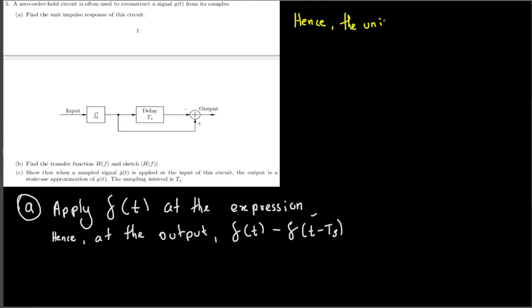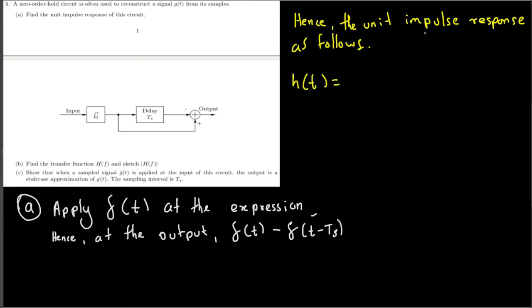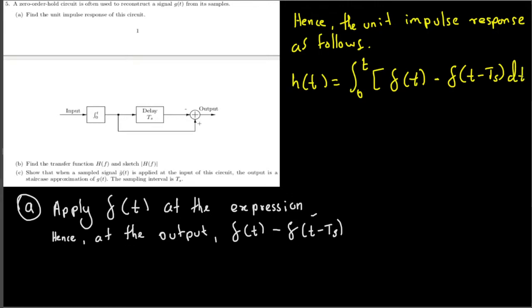We can write the unit impulse response h(t) as the integration from 0 to t of the output expression. So h(t) equals the integral from 0 to t of δ(t) dt minus the integral from 0 to t of δ(t − T_s) dt.